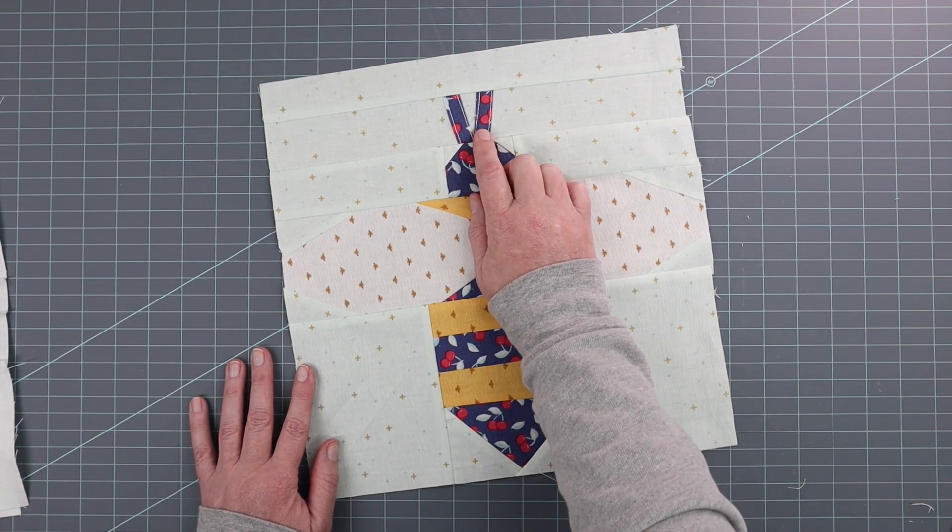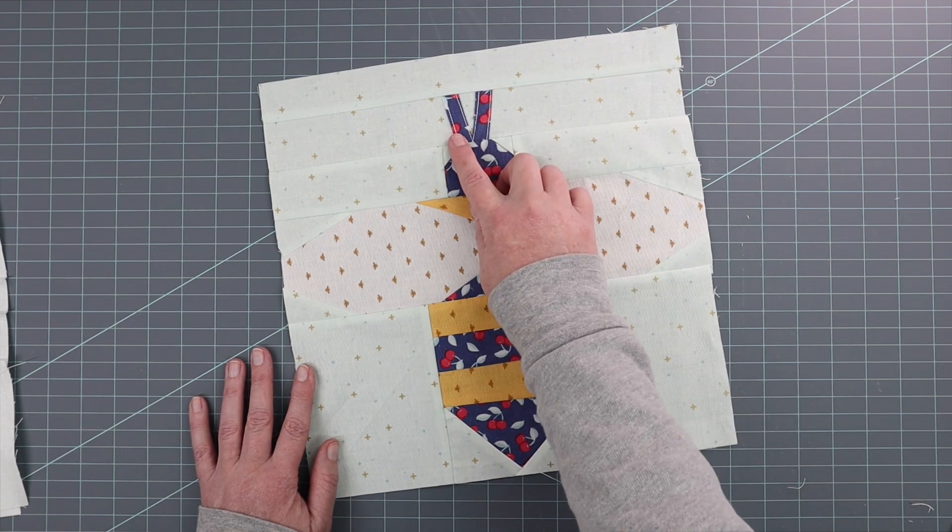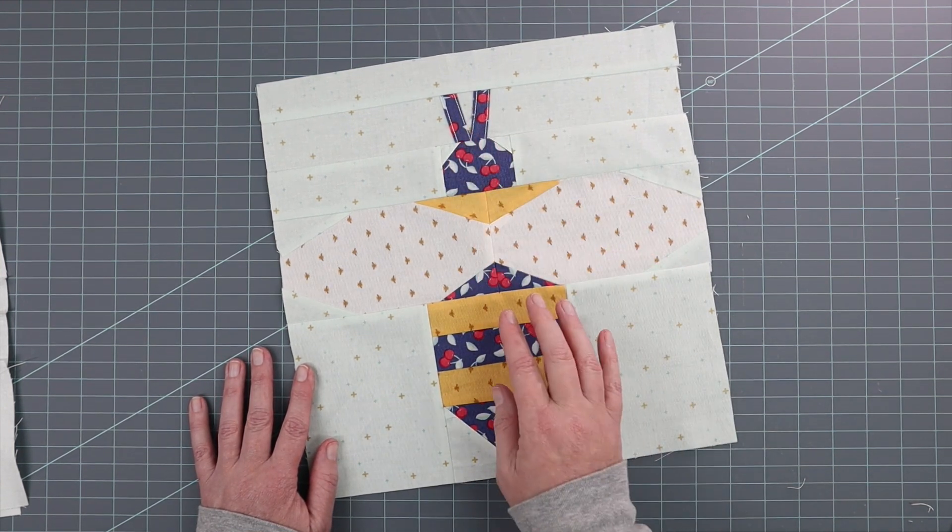These are not actually bias. These are cut on a straight line, but I refer to them as bias strips since you use a bias strip maker to create them.